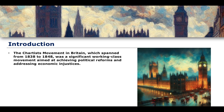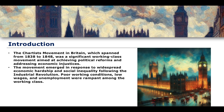As an introduction, the Chartist movement in Britain spanned a period of around 10 years, from around 1838 to 1848. It was mainly a working class movement aimed at the achievement of political reform and addressing economic injustice. One of the main elements of this movement was the idea of achieving rights in elections and suffrage for people who were particularly working class and disenfranchised by the system.